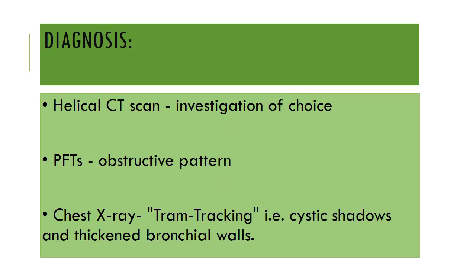Helical CT scan is done for the diagnosis of bronchiectasis and it is the investigation of choice. Pulmonary function tests will show an obstructive pattern: there will be an increase in total lung capacity and residual volume, and a decrease in forced expiratory volume, FEV1 to FVC ratio, and peak expiratory flow.